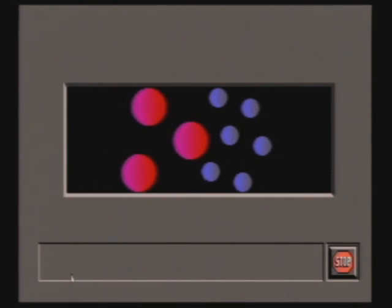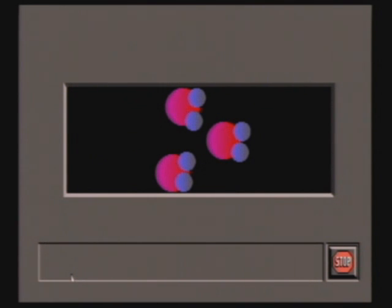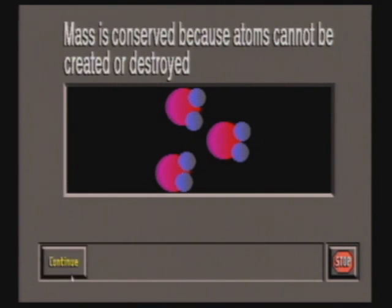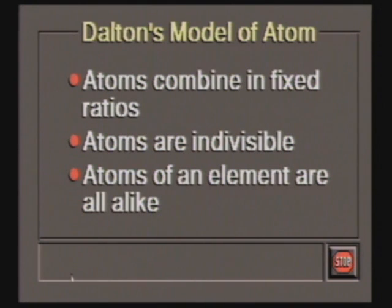According to Dalton's model, these particles enter into reactions with the atoms of other elements to form compounds. Mass is conserved in reactions because atoms cannot be created or destroyed. Atoms combine in fixed ratios because they are indivisible, and all atoms of any given element are all alike.